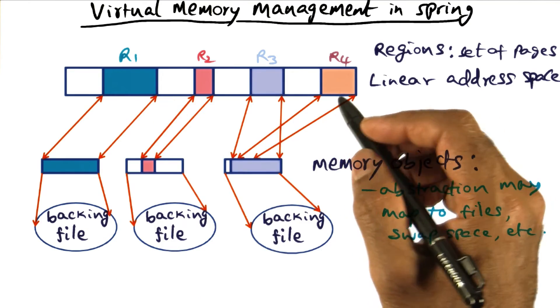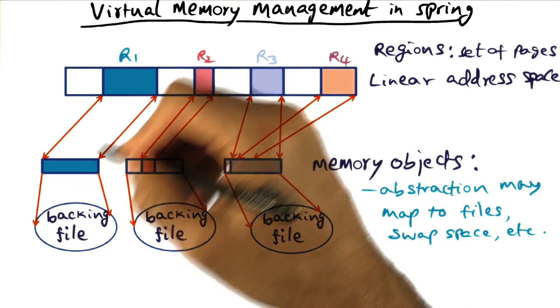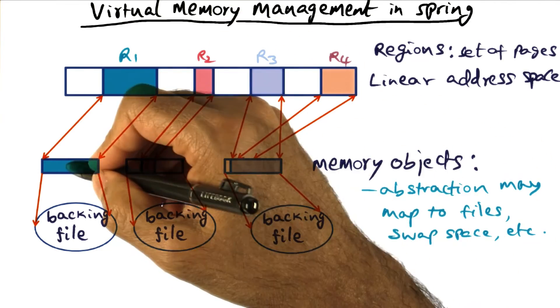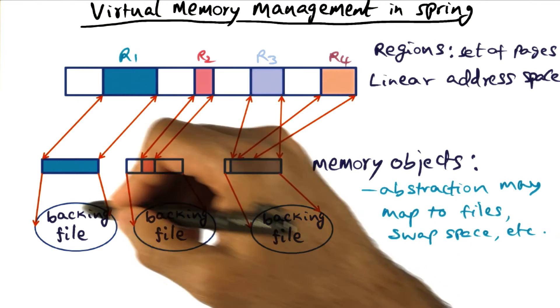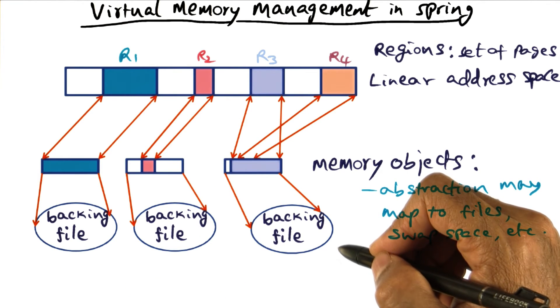So the way to think about these abstractions is linear address space broken into regions, regions map to memory objects, and memory object is an abstraction for things living on backing store, meaning a disk.